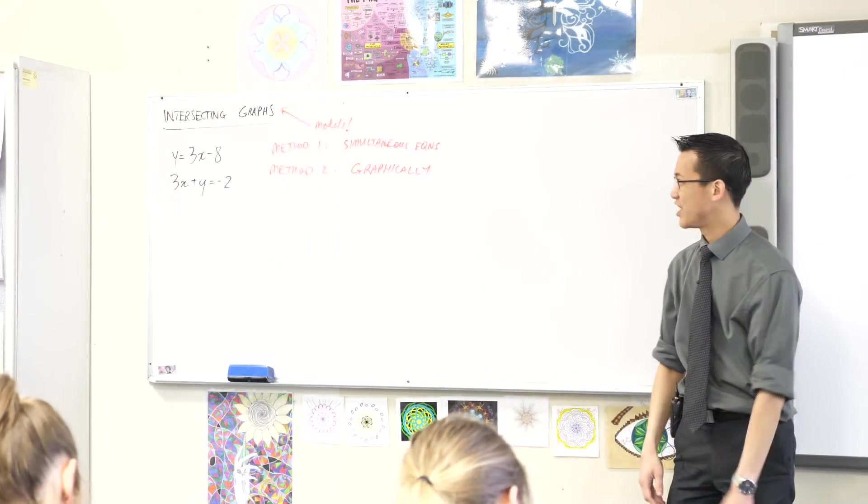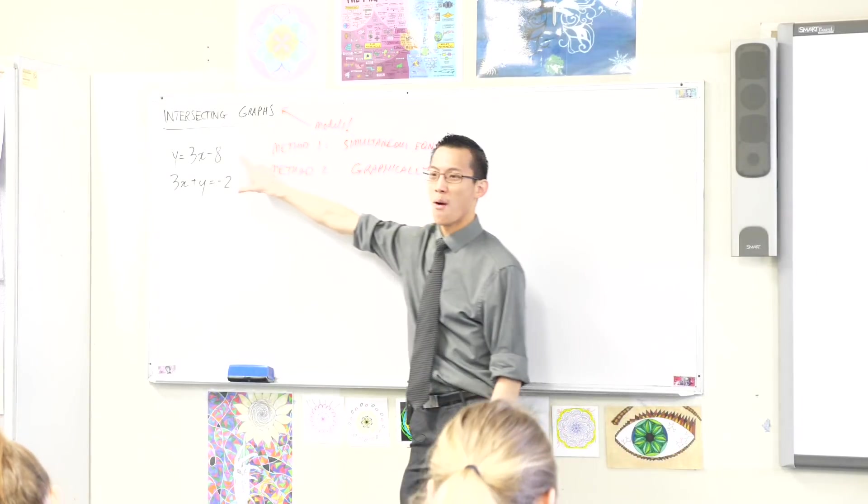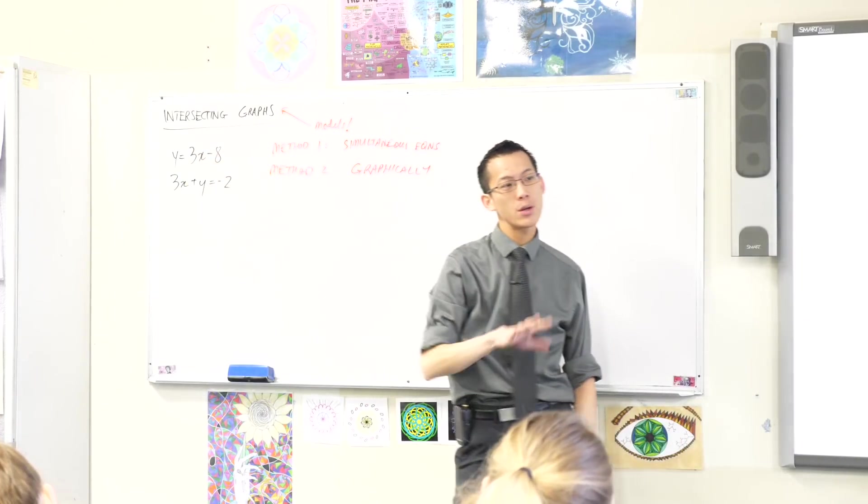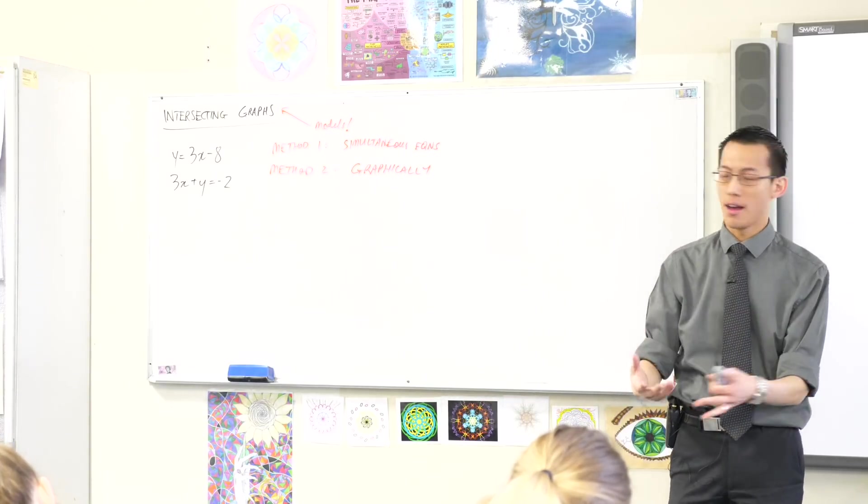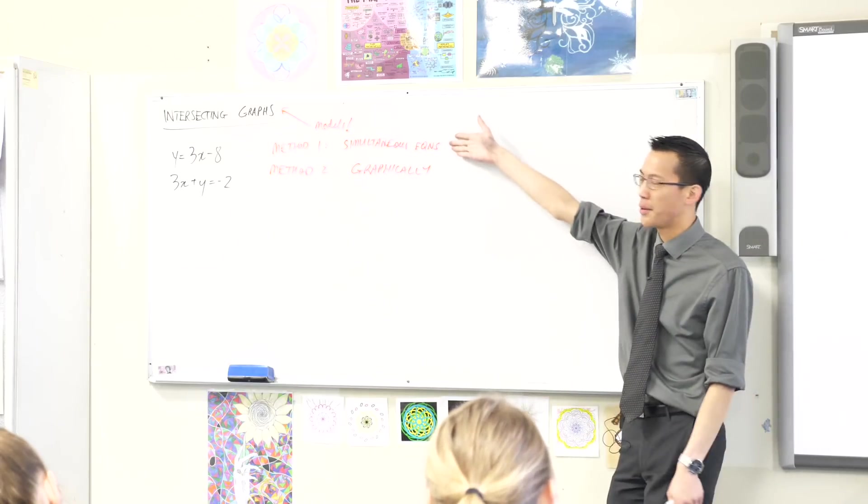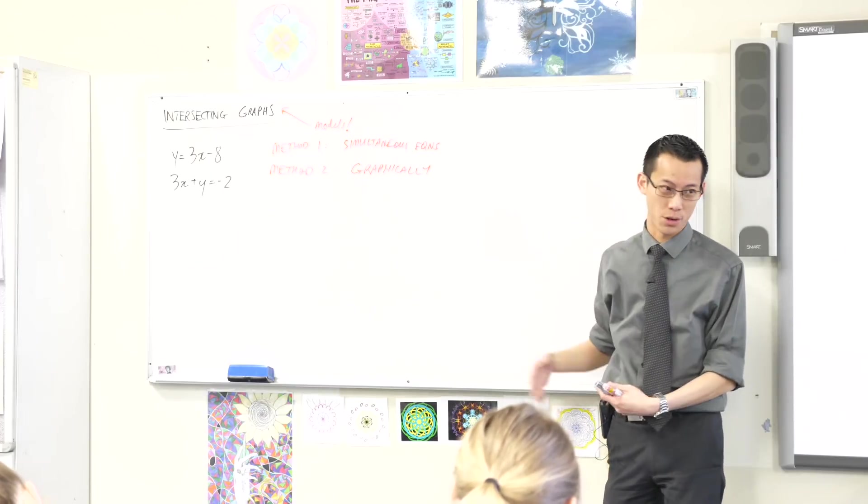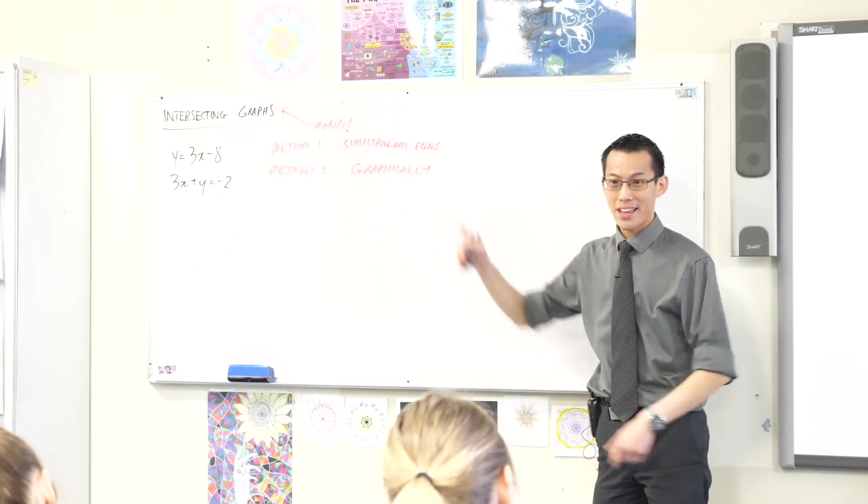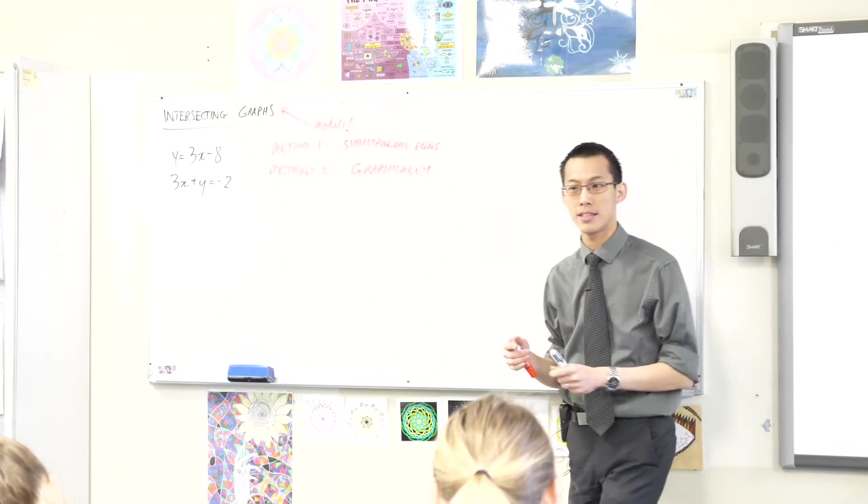The other catch is simultaneous equations, unsurprisingly, requires you to know what the equations are. Frequently your models will not, like you'll get a graph, you'll collect some data, you'll draw a trend line, but you don't know what the equations are, so therefore you're dead on arrival. You can't do anything with simultaneous equations if you don't have equations. So here are two graphs, we're going to focus on drawing them. So you'll need a set of axes.